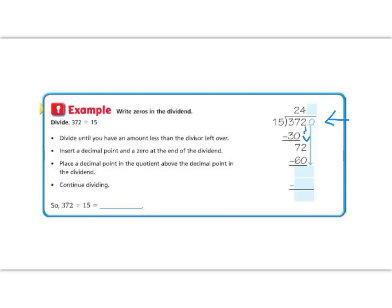15 goes into 72 four times, which is 60. 72 minus 60. 2 minus 0 is 2. And 7 minus 6 is 1. And then we bring down the 0. So now we have 120.